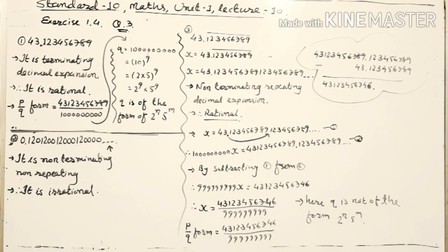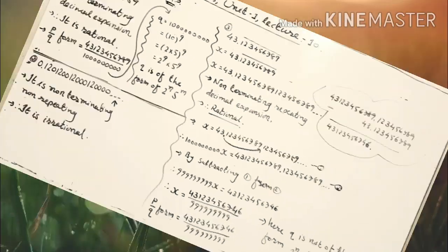In this case, q is not of the form 2 raised to n into 5 raised to m. So here we have finished our Unit 1. Revise the whole chapter and do it yourself.